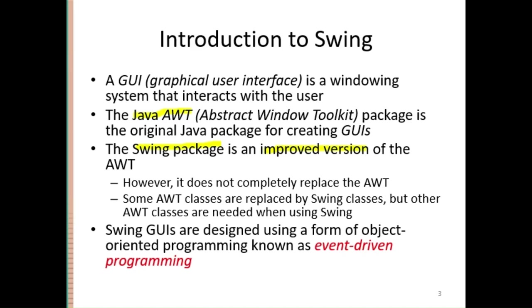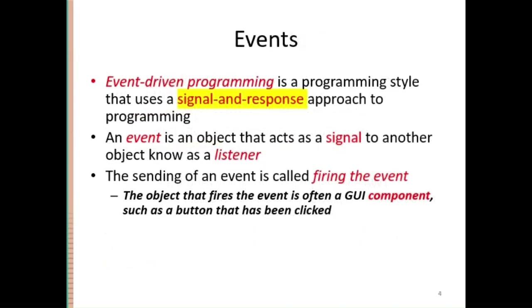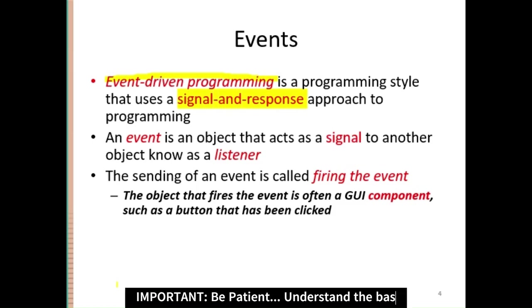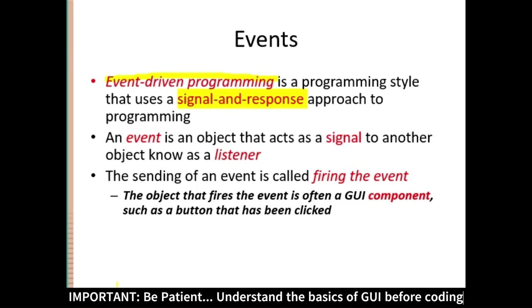When using GUI, you will be using another kind of programming called event-driven programming. In this kind of programming, you will be using object-oriented programming. So before building GUI applications, it is important that you understand event-driven programming. Event-driven programming is sometimes called a signal-and-response approach of programming. In event-driven programming, the basic thing is an event — an event is an object that acts as a signal to another object known as a listener.